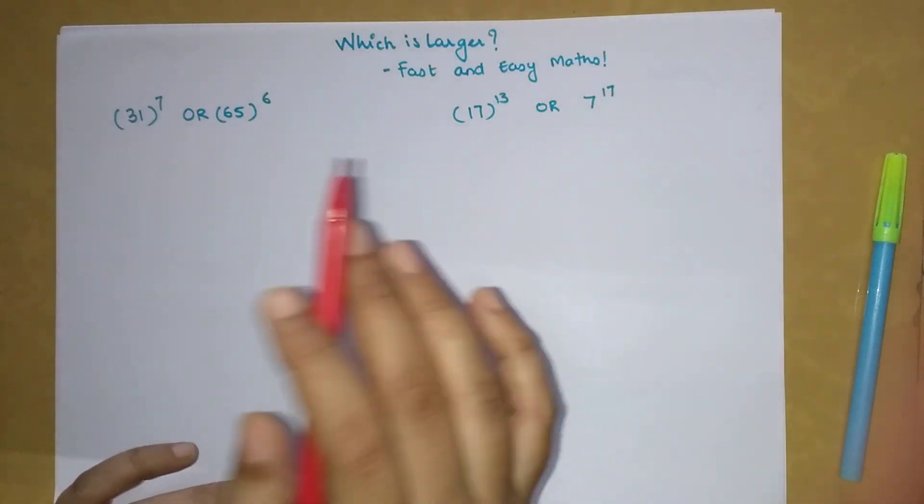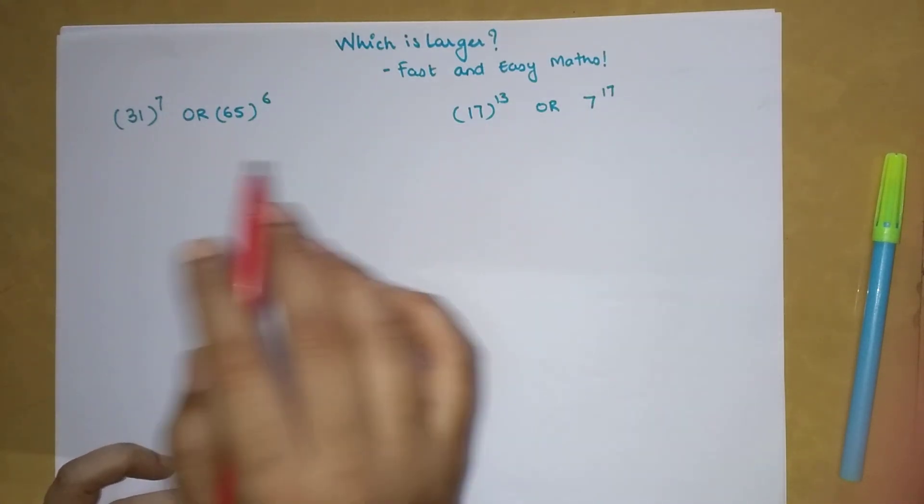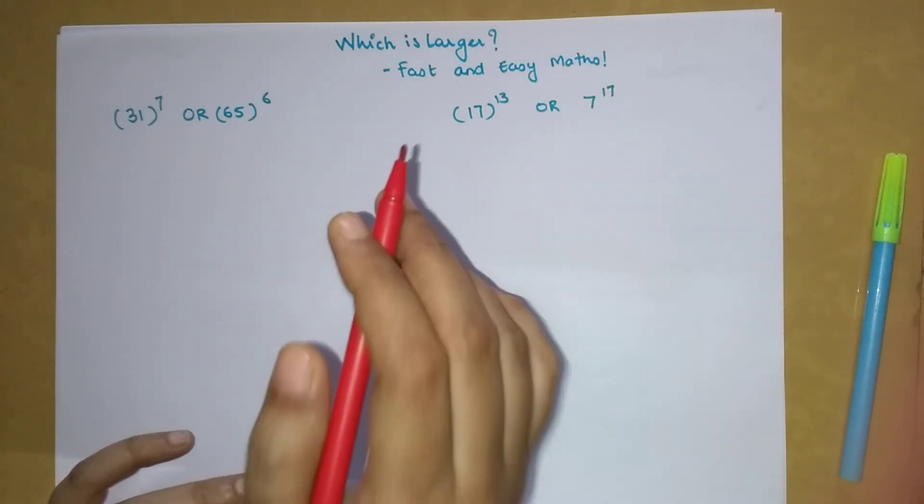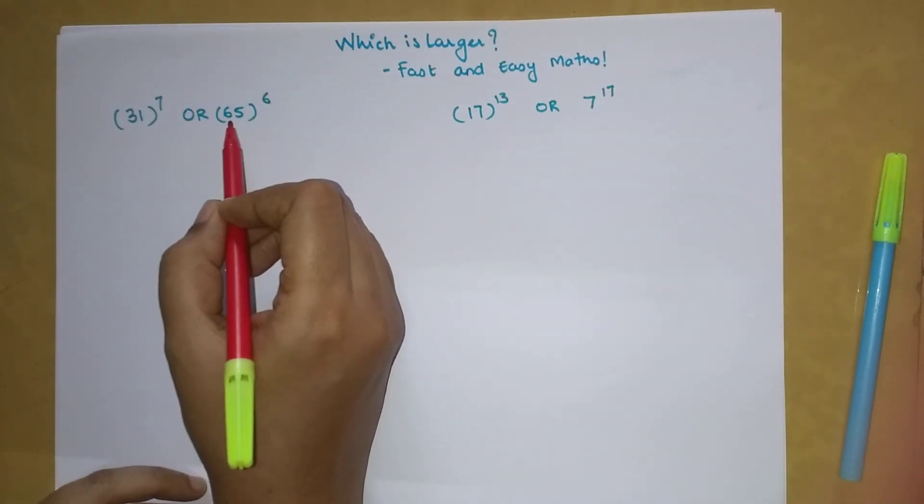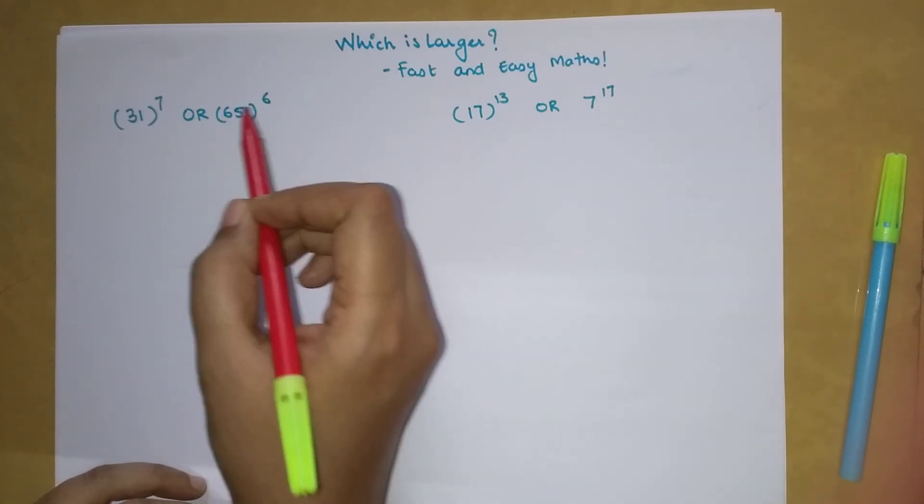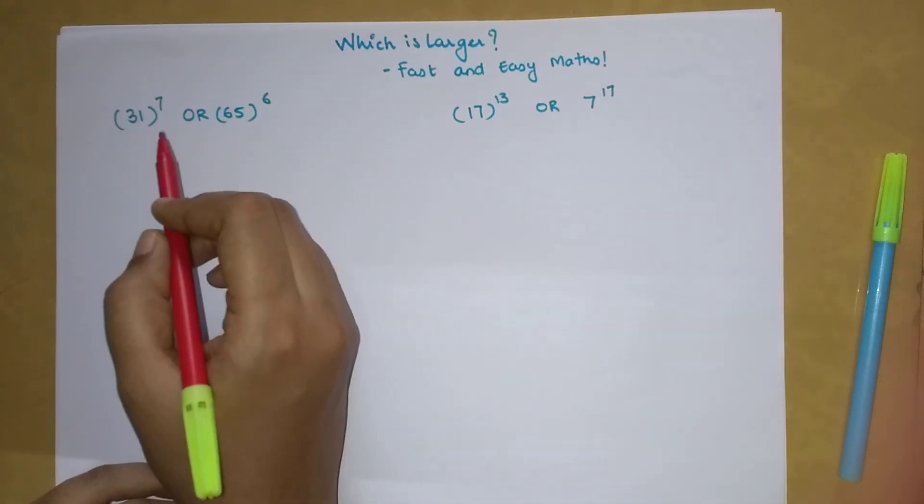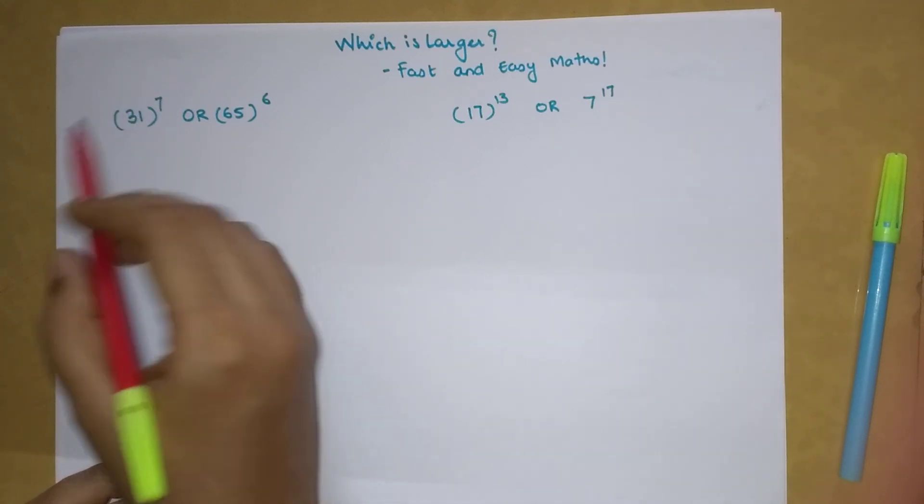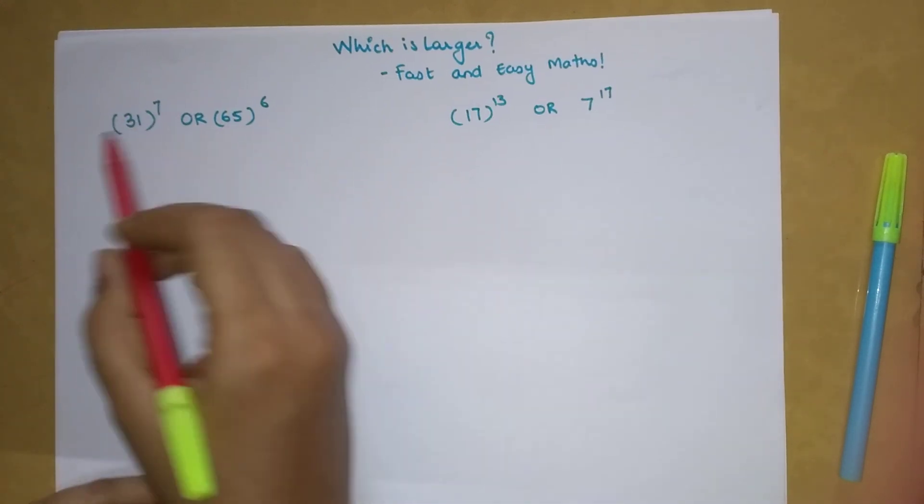In order to find your answers, one very important thing is that you have to write it in form of same inequalities. If I'm writing a number with 65 which is greater or lesser, here also I will make sure that the number with 31 will be greater or lesser. If it is greater here, also I'll write it is greater.